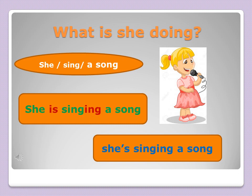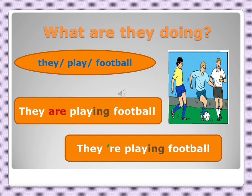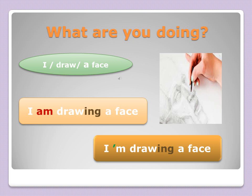So we use the auxiliary 'is' and add 'ing' to the verb 'sing'. Here is another example: what are they doing? They play football — no, they are playing football. Again, we use auxiliary 'are' and add 'ing' to the verb 'play'. Another example: what are you doing? I draw a face — in the present continuous: I am drawing a face. We add the auxiliary 'am' and 'ing' to the verb 'draw'.